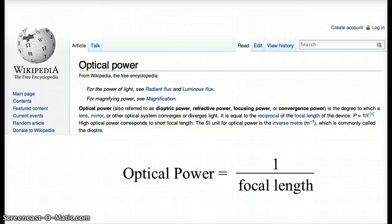So we get an answer from Wikipedia that the optical power is equal to 1 over the focal length. And if you check other websites, this is the definition you see lots of places. It is the real definition.